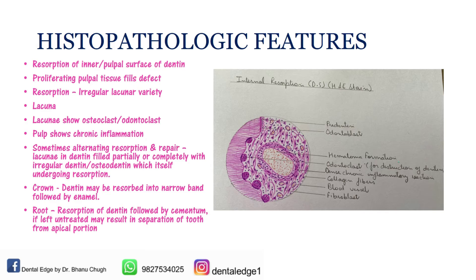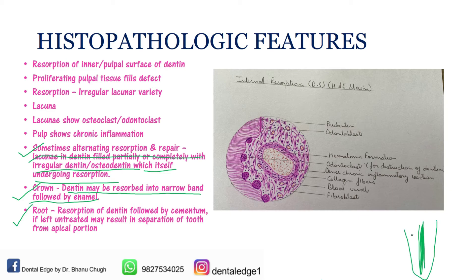Some additional points: sometimes alternating resorption and repair are seen — lacunae in dentine are filled partially or completely with irregular dentine or osteodentine, which itself may undergo resorption. If internal resorption is occurring in the crown, dentine may be resorbed into a narrow band followed by enamel. In case of the root, it will first resorb the dentine followed by the cementum if the tooth is left untreated, and may even lead to complete resorption with the tooth separated from the apical portion.